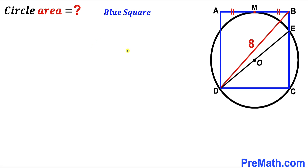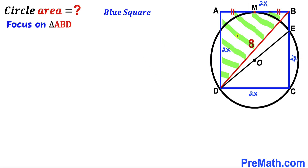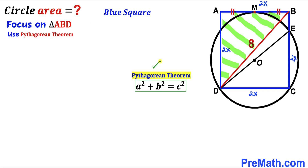Let's focus on the blue square ABCD and label its side lengths. We'll label side AB as 2x; since all side lengths are equal, all sides are 2x. Now let's focus on right triangle ABD and apply the Pythagorean theorem: a² + b² = c². Our hypotenuse is 8, so we write (2x)² + (2x)² = 8².